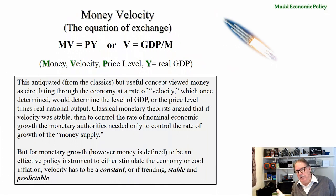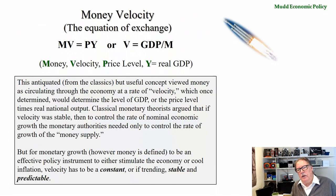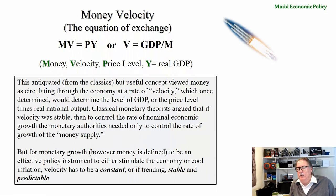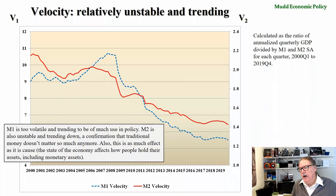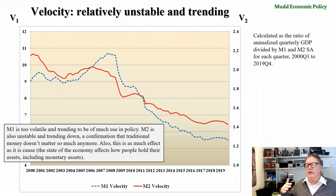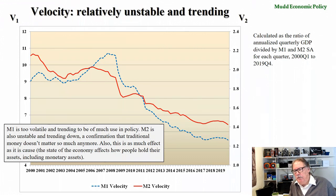A lot of people have the simplistic notion that the Federal Reserve System creates money and that's what makes the economy grow — and there's a half-truth to that. If they create a lot of money, the economy will probably have a little pop, but not in any reliable way. For monetary growth to be an effective policy instrument — to either stimulate the economy or cool it — velocity has to be a constant, or if it is trending, it has to be stable and predictable. When we look at velocity, M1 velocity is neither — you can see it going up and going down. M2 velocity is really pretty unstable and trending down. If it's trending down, it's having less and less influence upon national spending and GDP.